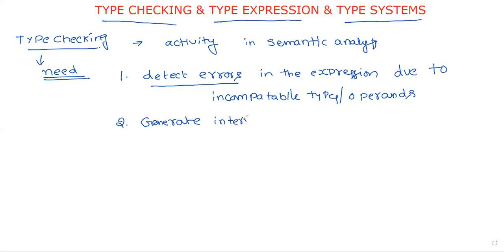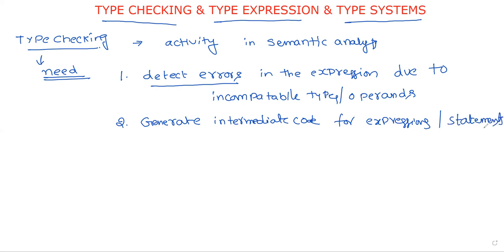Another purpose of type checking is to generate intermediate code — for expressions and for different types of statements. We already discussed different types of intermediate statements: assignment statements, copy statements, array statements, pointer statements, and so on. For the generation of intermediate code, type checking is very important.